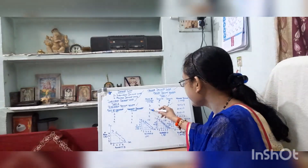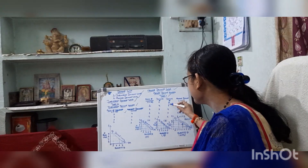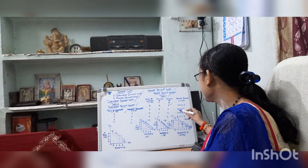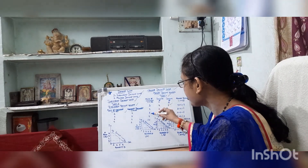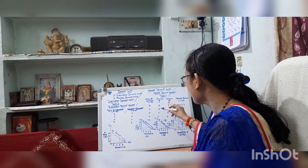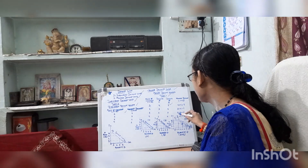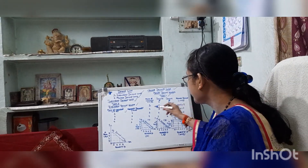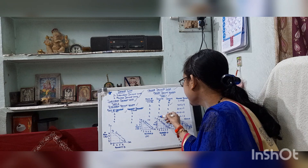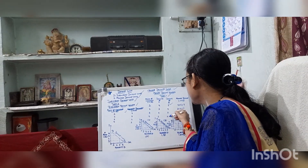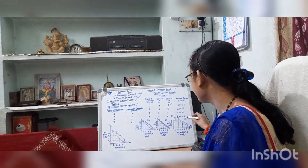When price of chocolate is 2, demand of A is 3 and demand of B is 4, so market demand is 3 plus 4 equal to 7. When price of chocolate is 4, demand of A is 1 and demand of B is 2, so market demand is 1 plus 2 equal to 3.